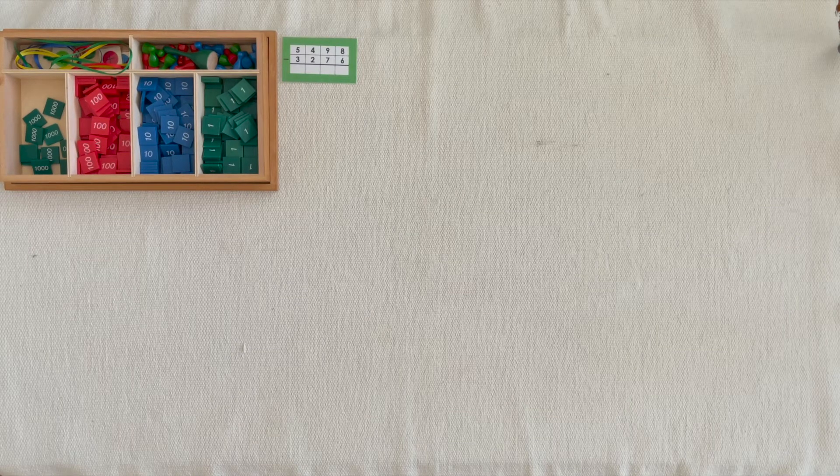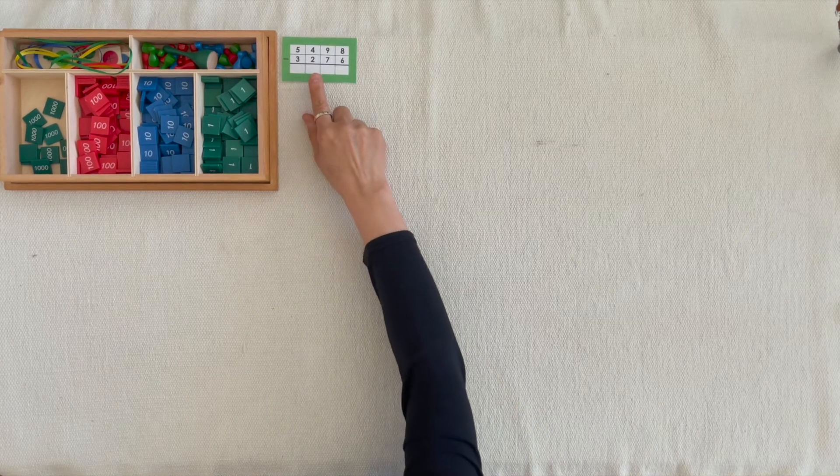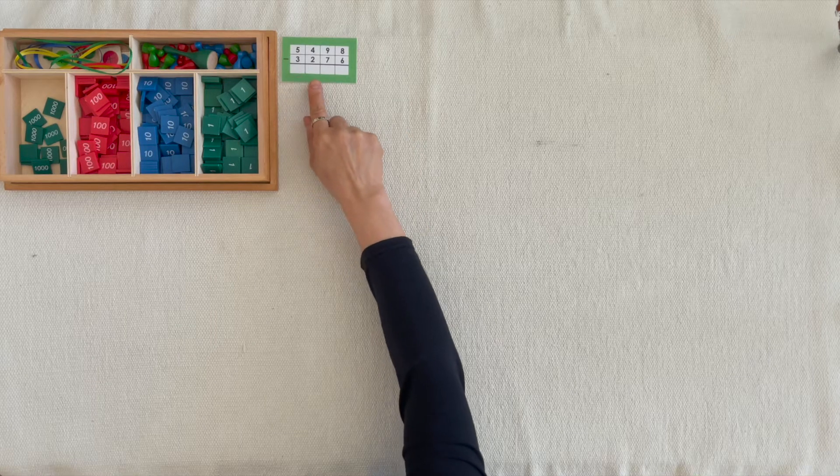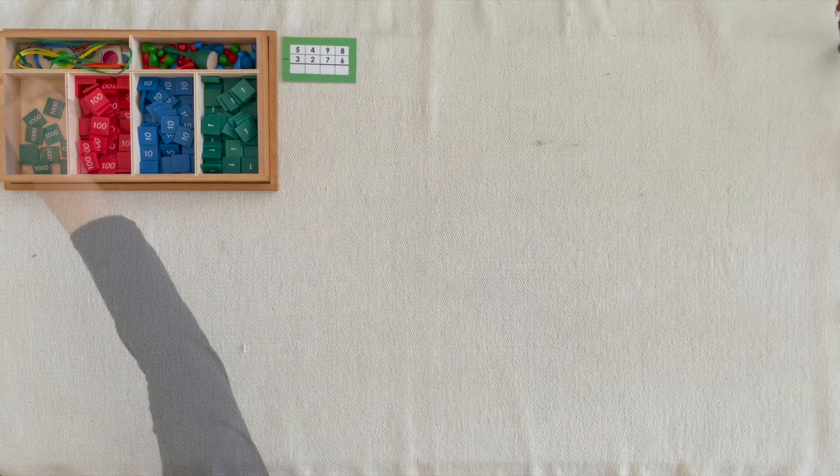This is called Operations with Stamp Game. 5,400s, 9,10s, 8 units minus 3,200s, 7,10s, 6 units.